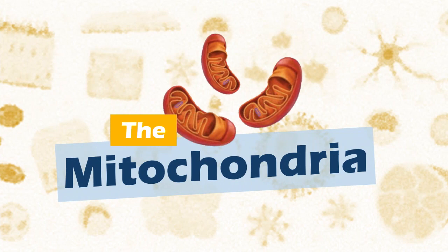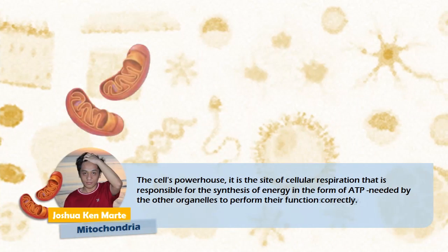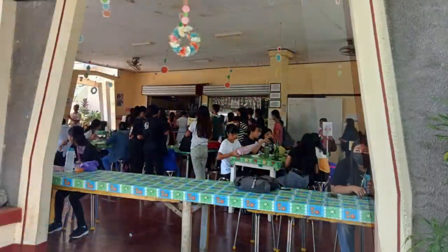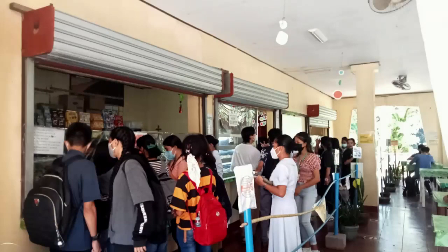Drawing near the cell, we have the Mitochondria — the cell's powerhouse. The site of cellular respiration, it is responsible for the synthesis of energy in the form of ATP, needed by the other organelles to perform their functions correctly. Just like our school canteen, they provide food for the students and school staff. They gain energy needed by the body, which boosts concentration during lectures and the delivery of information.